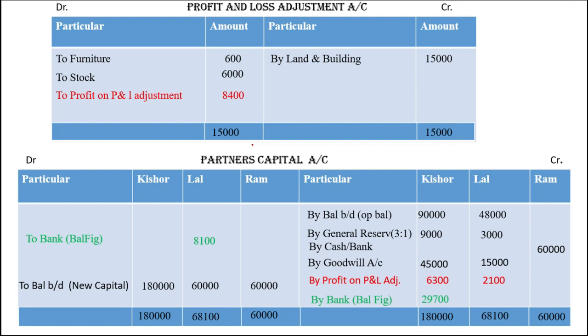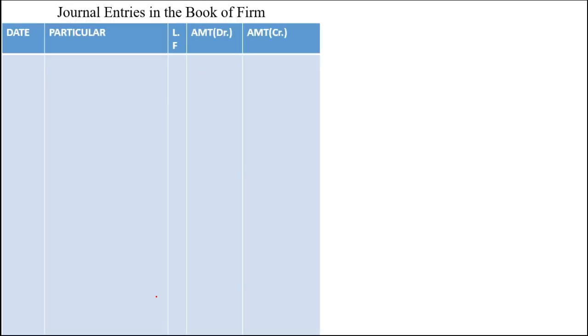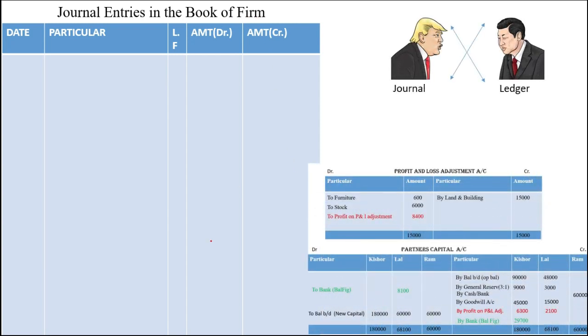This is our solution — open your notebook and see question number 5. We have a ready-made solution. Now we will move to the journal entry. This is the format: date, particular, ledger folio, debit amount and credit amount. This picture says journal and ledger are always opposite to each other, as I explained in the previous video.